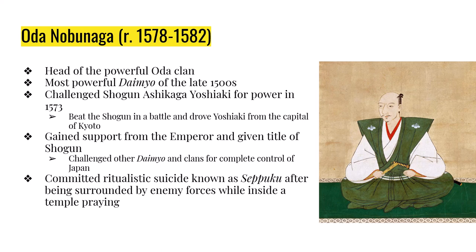Nobunaga is given the power to run the government by the Emperor. After gaining the Emperor's support, Nobunaga continues to challenge other daimyo who stand against him, having his Oda clan fight other clans for control of Japan. Nobunaga eventually commits ritualistic suicide known as seppuku after being surrounded by enemy forces inside a temple. Seppuku involves taking your samurai sword and cutting yourself open so your innards are outward, and you die.